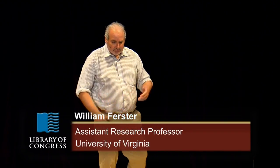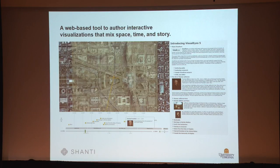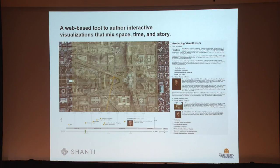My name is Bill Furster. I'm with the University of Virginia at the Sciences, Humanities, Arts, and Humanities Technology Initiative. What I've come here today to show you is a tool called Visualize. Visualize was designed for use in two different areas: one is for teaching classes interactively in a project-based setting, and also we use it for making scholarly arguments using primary source historical data. Basically, we've connected a timeline, a story panel, and a slippy map all together so that you can actually make things with it.